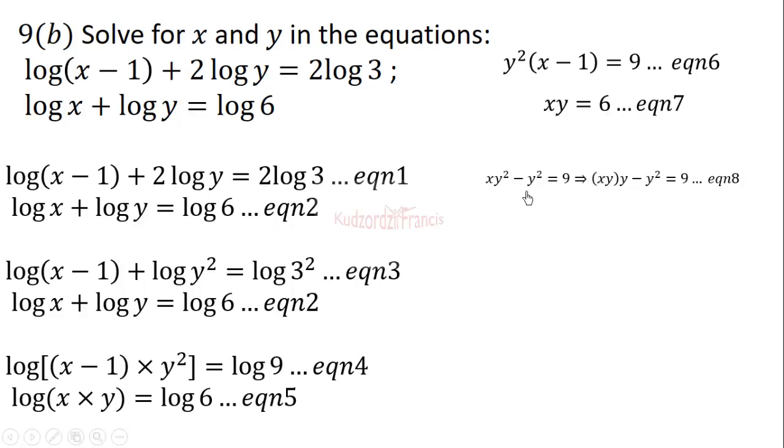We can rewrite xy² as (xy) × y, so we can substitute 6 wherever we see x times y. That gives us 6y - y² = 9.